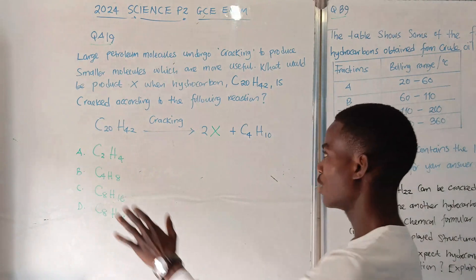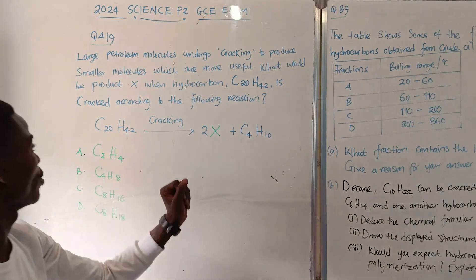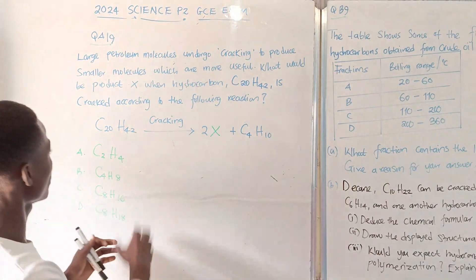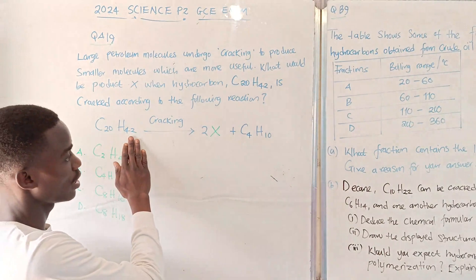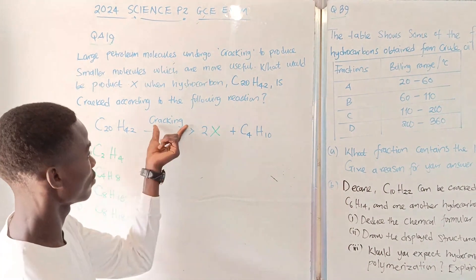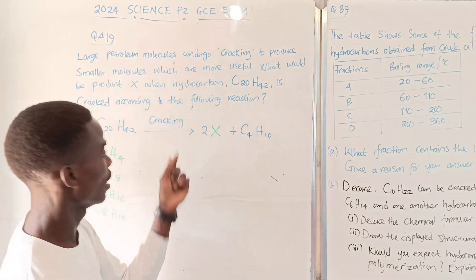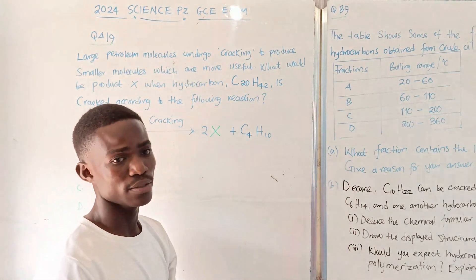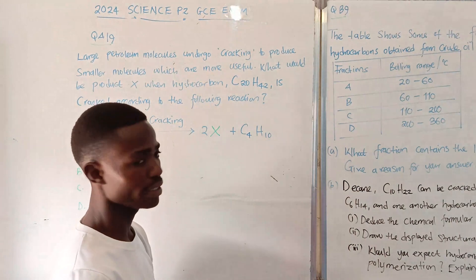So, we have the reaction here, the chemical formula telling us that C20H42 undergoes cracking. This is the precursor, then these are the products. We need to understand what is happening.